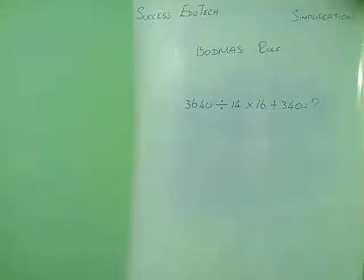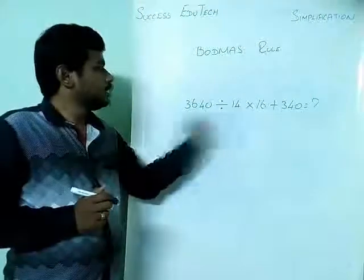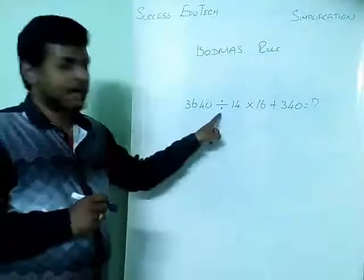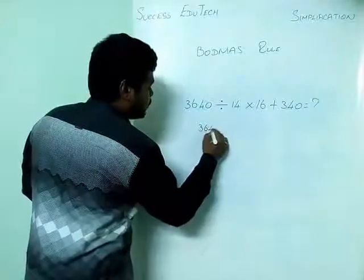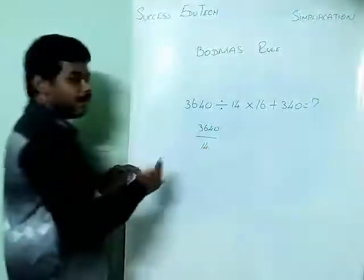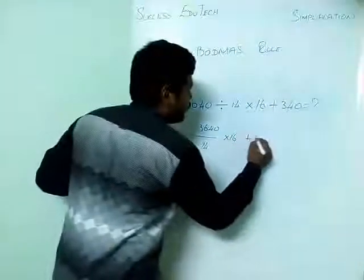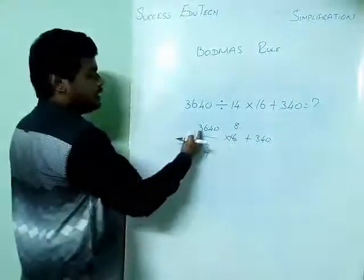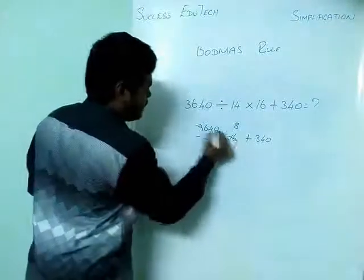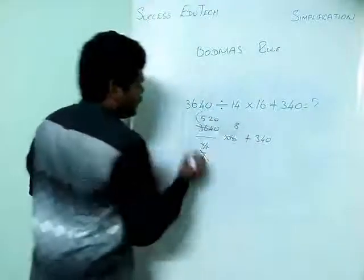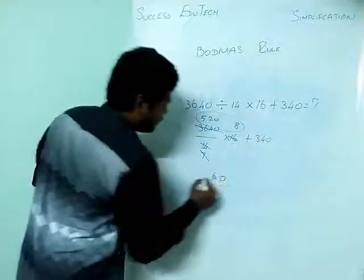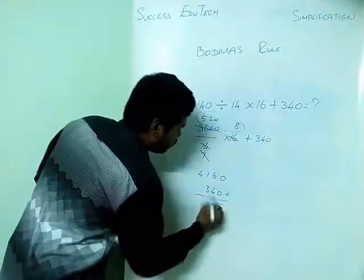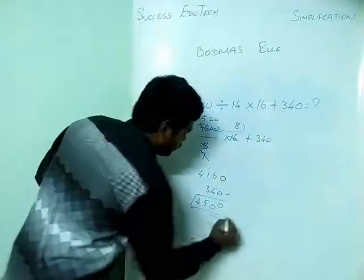Here is another problem: 3640 divided by 14 multiplied by 16, plus 340. By the BODMAS rule, do division and multiplication first. Cancel 14 and 16 by 2 to get 7 and 8. Divide 3640 by 7 to get 520, then multiply 520 by 8 to get 4160. Add 340 to get 4500 as the final answer.